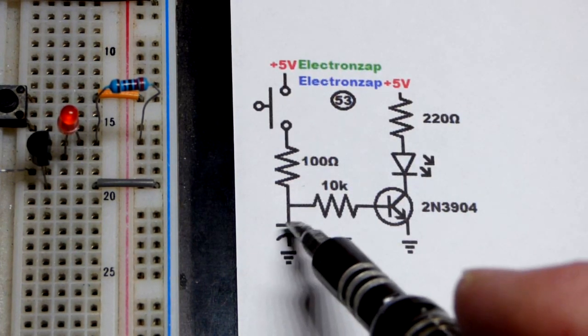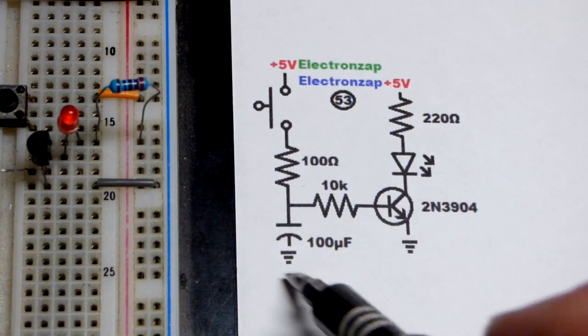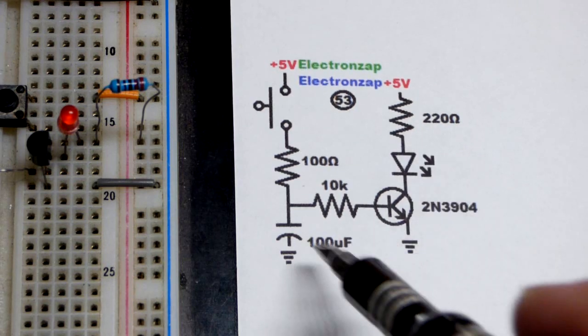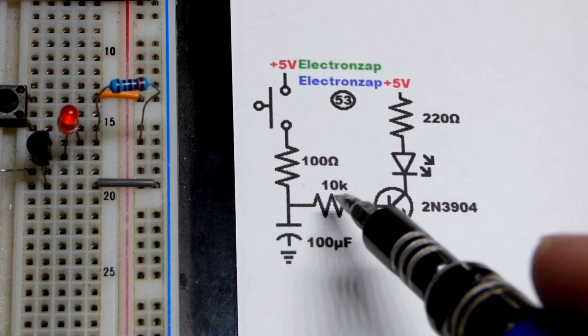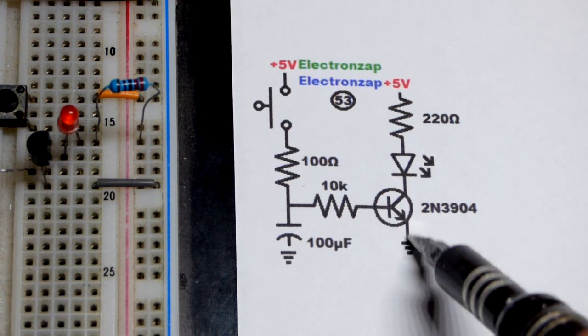When we open the switch, now the capacitor, its charge will keep current flowing for a bit. It will be enough to keep the transistor on fully for lighting a red LED. But then it will trickle down and as the current trickles down low enough.